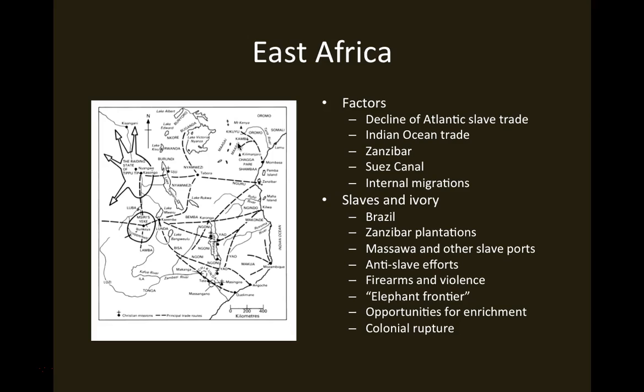Anti-slave efforts were targeted largely at the transatlantic trade and didn't slow down at all the trade in slaves passing along the eastern coast into the Middle East, Central Asia, India, and other parts of Asia. In fact, at its height the East African coast was producing something like 70,000 slaves a year — an incredibly high volume, enough to rival anything that had taken place in any one region of the transatlantic slave trade at its height in the 18th century. And so the slave trade increased significantly.